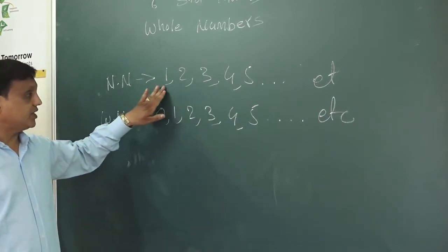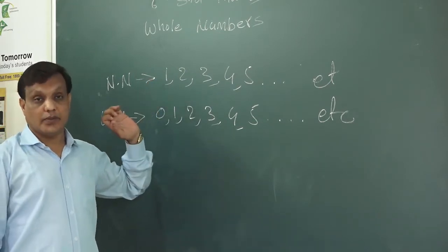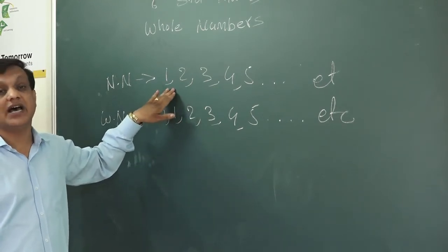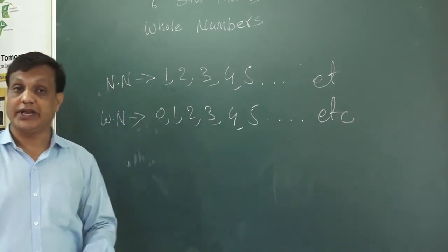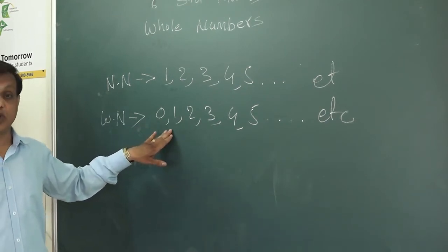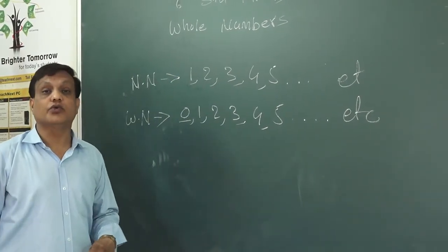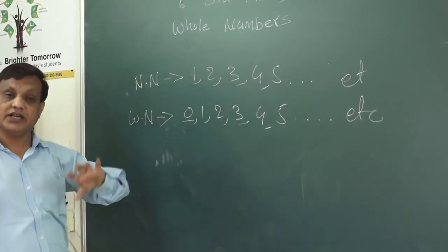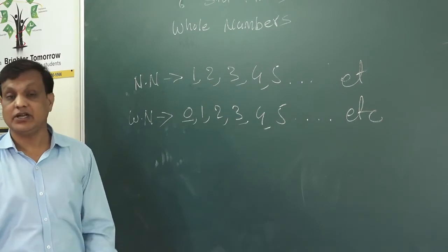These are natural numbers and these are whole numbers. We can say natural numbers are also whole numbers, because natural numbers are present in the whole numbers. But you cannot say whole numbers are natural numbers — that is false, because in natural numbers there is no zero. So natural numbers can be called natural numbers and also whole numbers, but whole numbers cannot be called natural numbers.